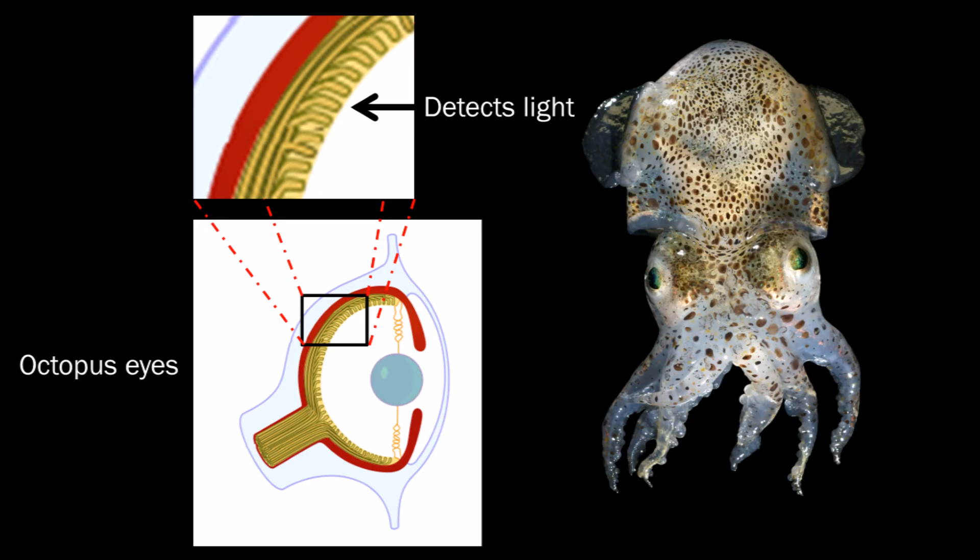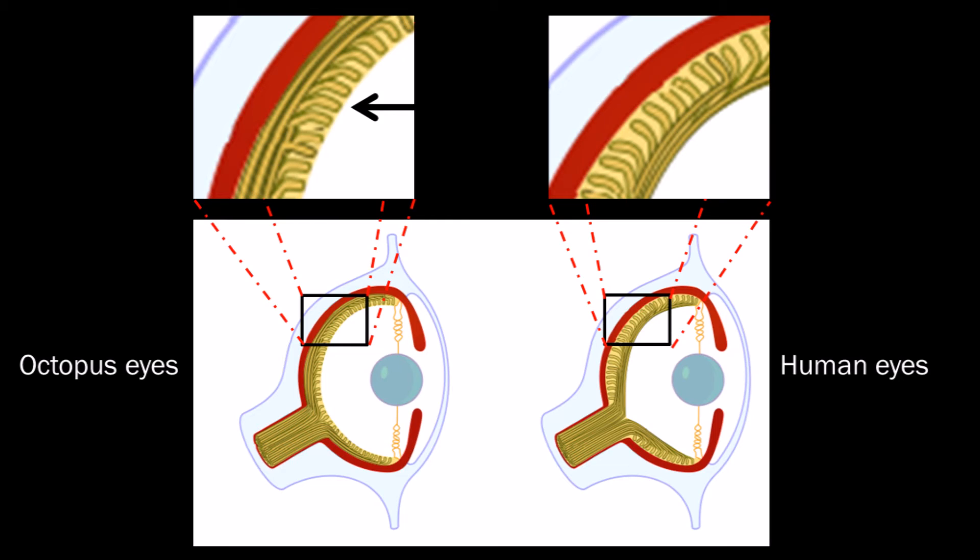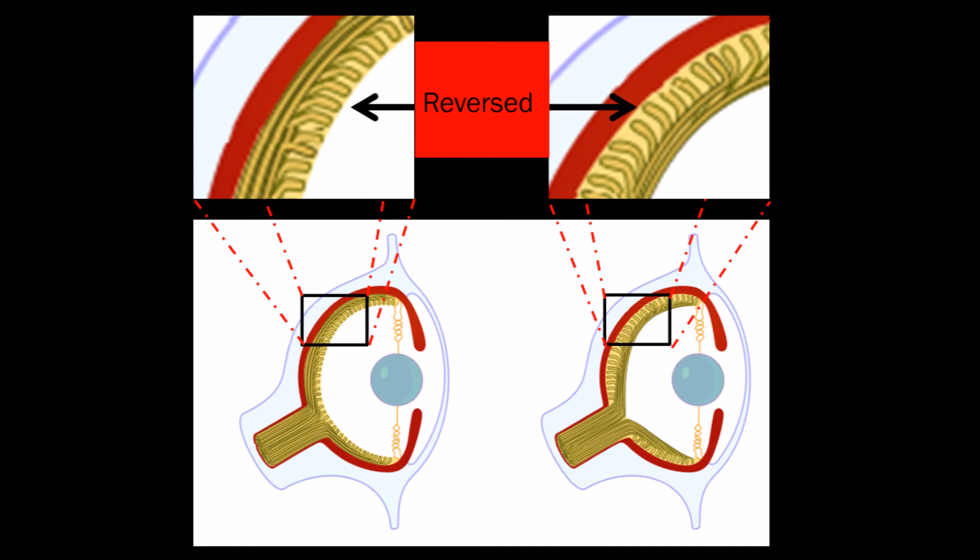With octopuses that is the case. They don't see as well as we do though. But anyway, evolution made a mistake. It is actually so badly designed that even evolution cannot really explain it.